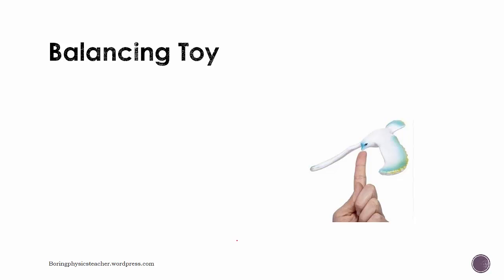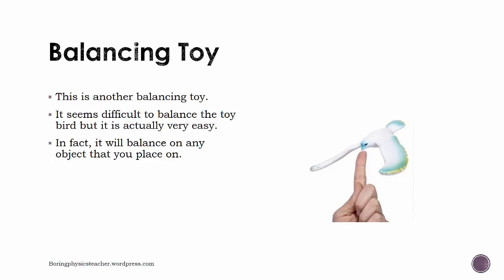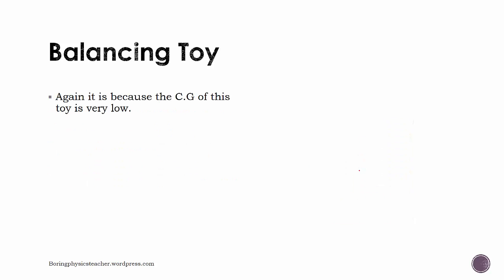Another example: this is another toy that you should try to balance on your finger. It seems to be difficult to balance this toy, but it is actually very easy. In fact, if you put it anywhere, be it a finger, be it on a very small tiny object, as long as it can support the beak, it will actually balance. It will even regain its balance if you disturb it.